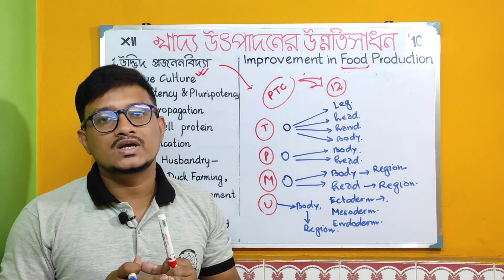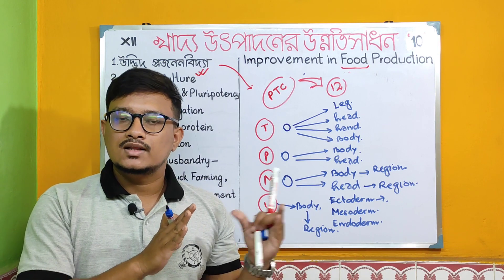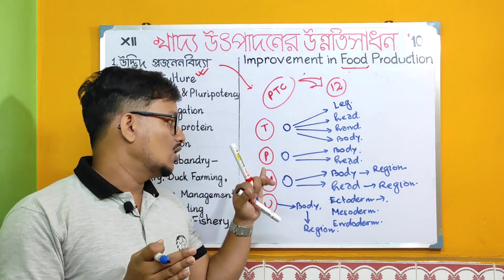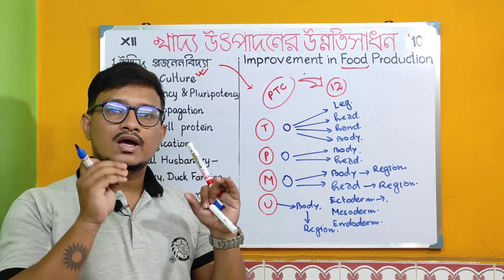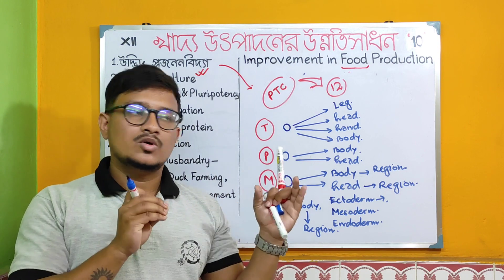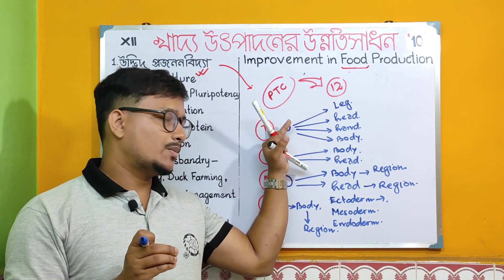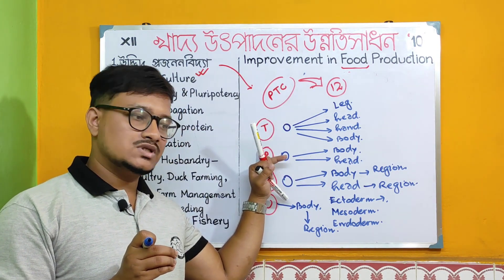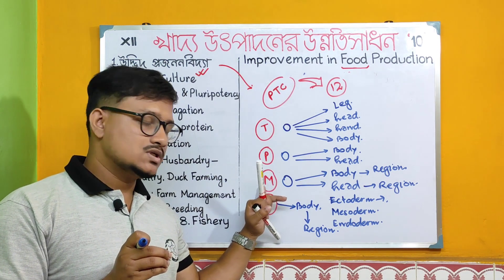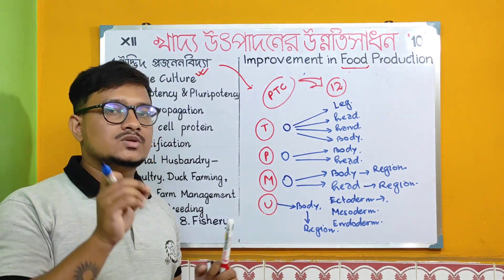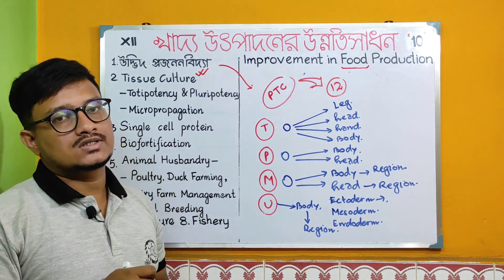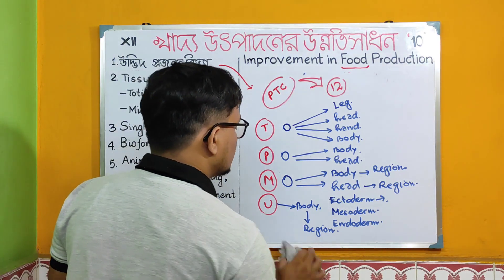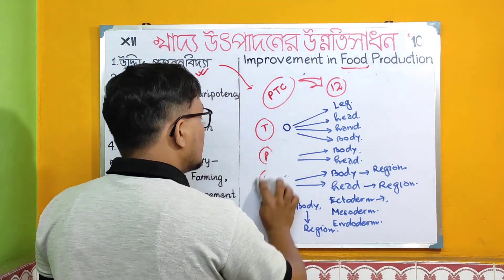So the four types are totipotency, pluripotency, multipotency, and unipotency. Toti means complete — from potency means to generate. Pluripotency has a basic capacity above unipotency, multipotency capacity above unipotency, and unipotency means unidirectional — single direction. These points are clear in the field of plant tissue culture.